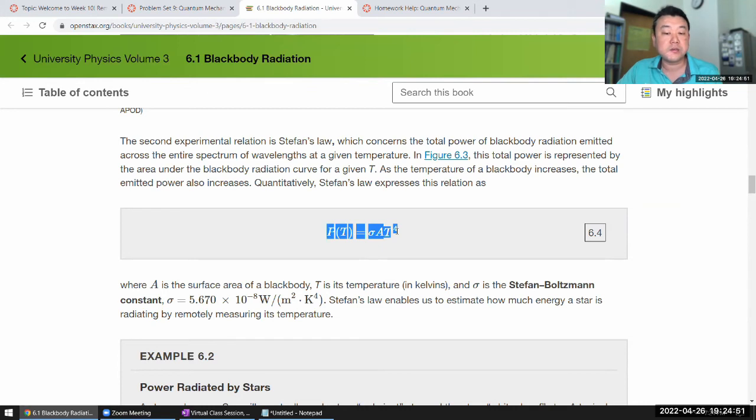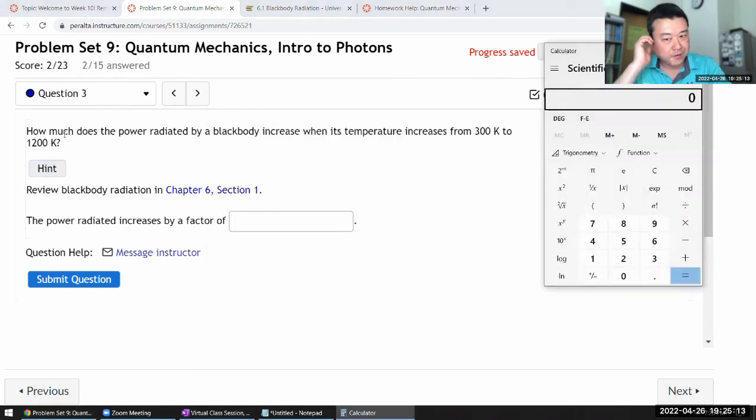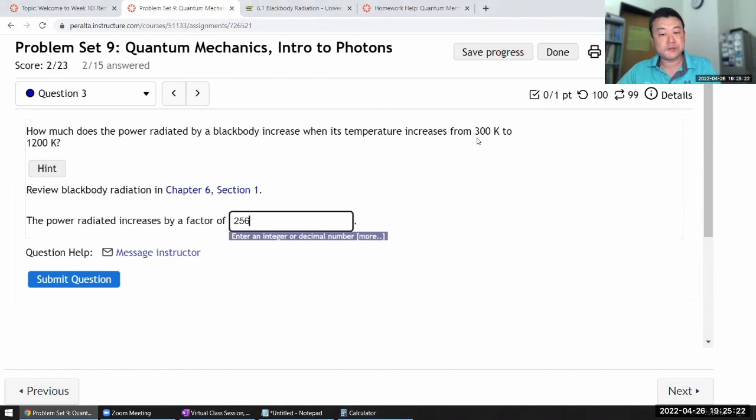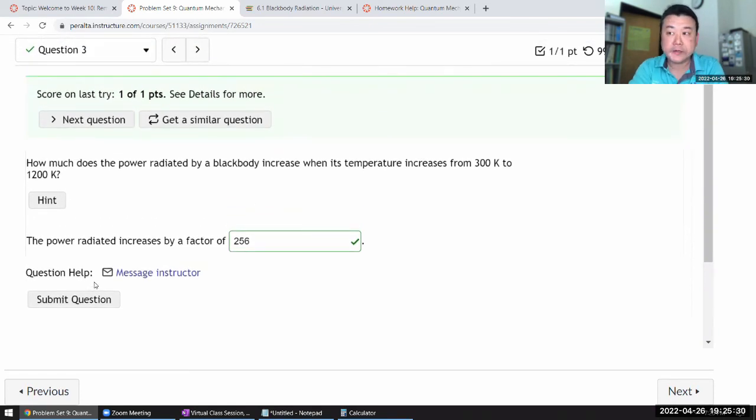Important thing here is the T to the fourth power. So here the temperature is increased by a factor of four. So the intensity will increase by a factor of four to the fourth power. 256. That's the factor by which the total power has increased when the temperature increased by a factor of four. It's quite significant. It's a really strong dependence on temperature.